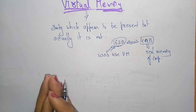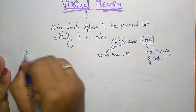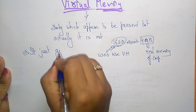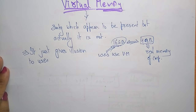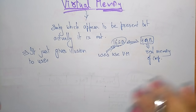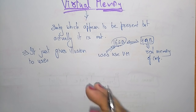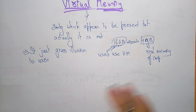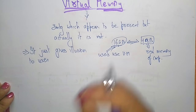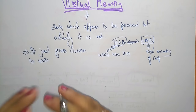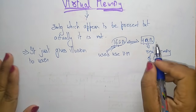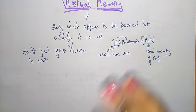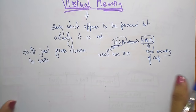Virtual memory is a concept that gives the illusion to the user that they will have main memory equal to the capacity of secondary storage media. So the programmer can write a program which requires more memory than the capacity of main memory. Such programs require more memory than what main memory can hold.